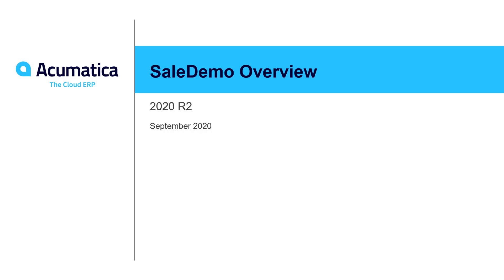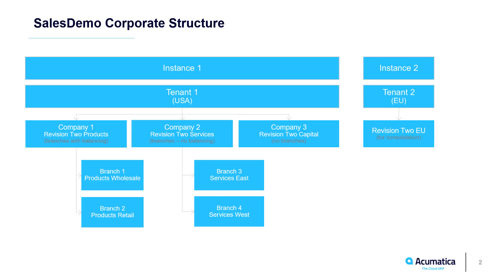Sales Demonstration Overview in Acumatica 2020 R2. Acumatica provides a sales demonstration account so you can demonstrate features in a ready-to-use format for clients. Out of the box you get a single tenant instance with multiple companies. Company one and two each have two branches set up with balancing or no balancing. A separate instance with a base currency of euros is also kept for consolidation.